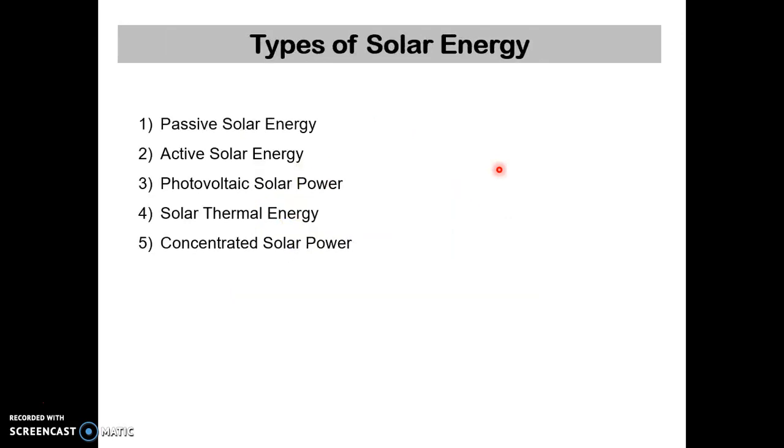Solar energy can be applied in various forms and types. They are passive solar energy, active solar energy, photovoltaic solar power, solar thermal energy and concentrated solar power. Let us see each type in brief.